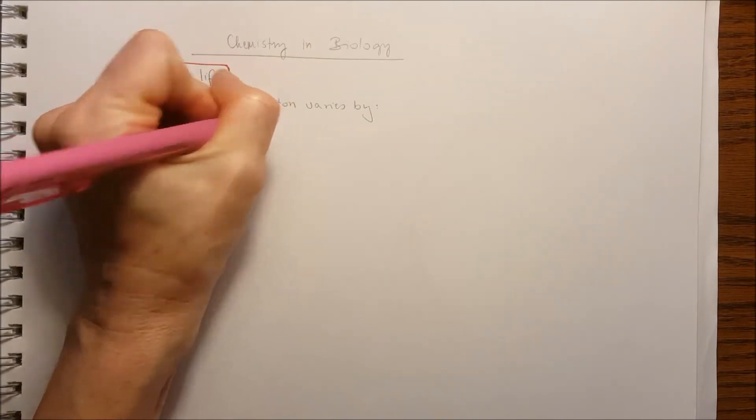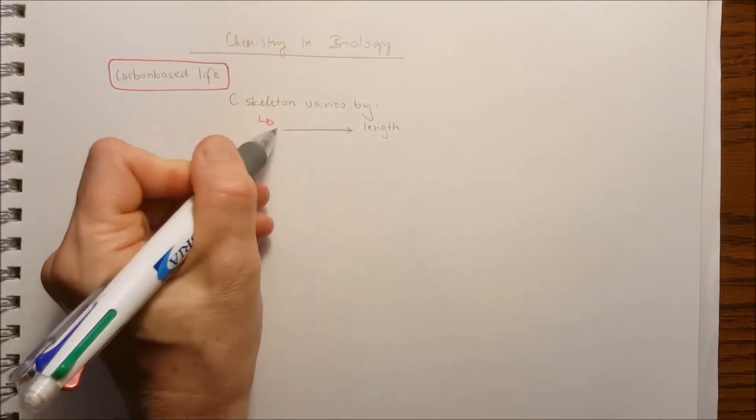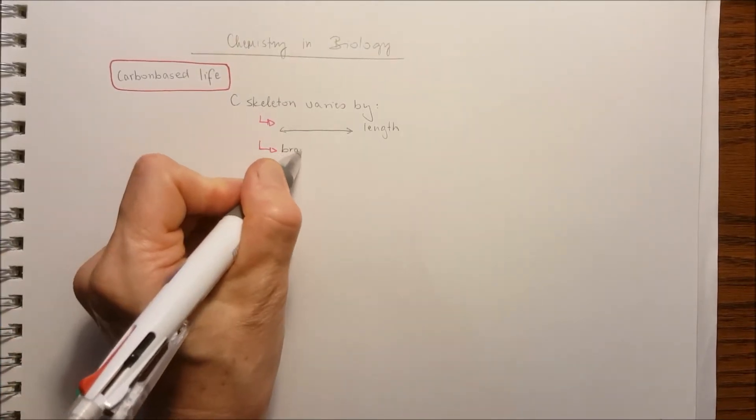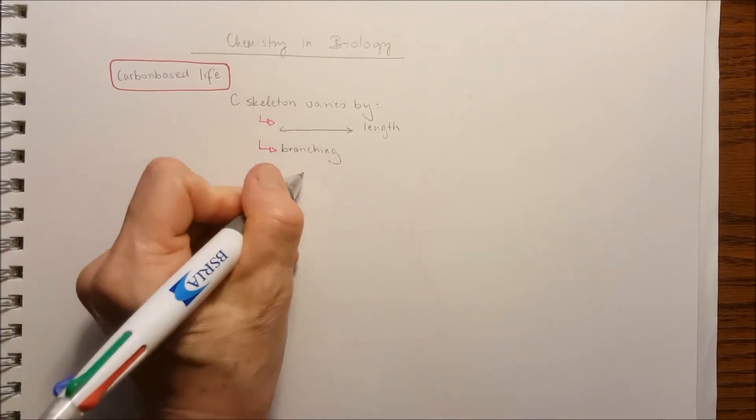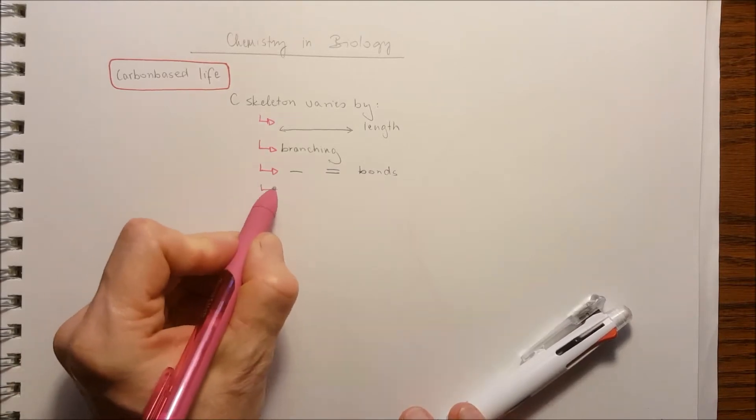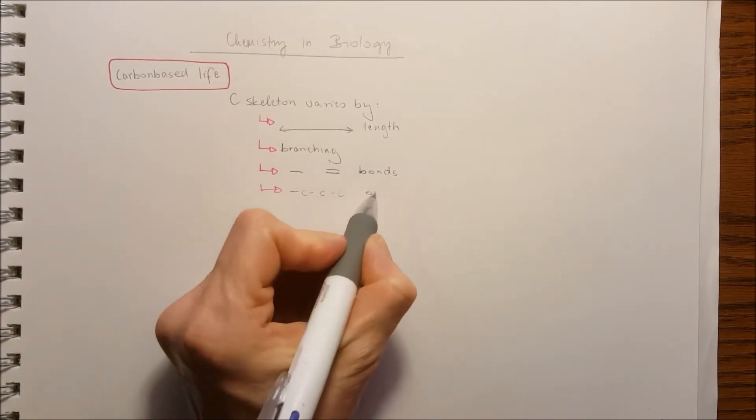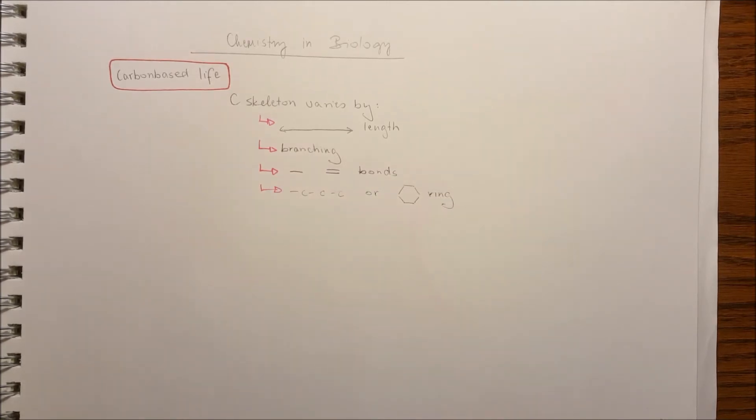The carbon skeleton can vary by the length of the carbon skeleton. It can branch off or it can be straight. It can contain single or double bonds between the carbons and it can form a straight line, the carbon chain, or it can form a ring structure.